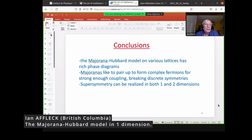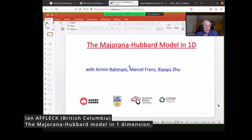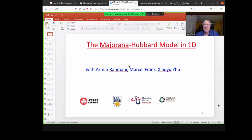Okay, so I want to talk about the Majorana-Hubbard model in one dimension. I've actually studied the model also in two dimensions but probably won't have time to discuss the two-dimensional case. So my collaborators in one dimension were Armin Rahmani, who's now a professor at Western Washington University, Marcel Franz, who's a joint colleague of mine at UBC, and Xiaoyu Zhu, who was a visitor from China for one year.